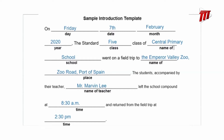On Friday, 7th February 2020, the Standard 5 class of Central Primary School went on a field trip to the Emperor Valley Zoo, Zoo Road, Port of Spain. The students, accompanied by their teacher Mr. Marvin Lee, left the school compound at 8:30 a.m. and returned from the field trip at 2:30 p.m. This is our introduction to our report.